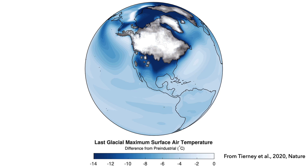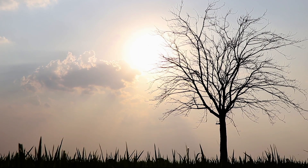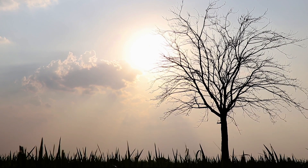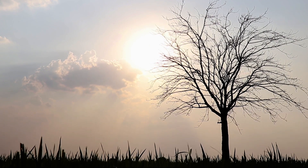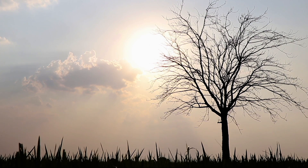Paleoclimatologists like myself also use climate models to understand the physics of the extreme climate states in the past — for example, cold worlds like the last glacial maximum, and warm worlds like the Eocene 50 million years ago, when there were no permanent ice sheets and temperatures soared. Moving forward, the million-dollar question is: how good are these climate models at predicting future climate change? As the famous saying goes, all models are wrong, but some are useful.